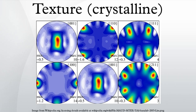A sample in which these orientations are fully random is said to have no distinct texture. If the crystallographic orientations are not random but have some preferred orientation, then the sample has a weak, moderate, or strong texture.